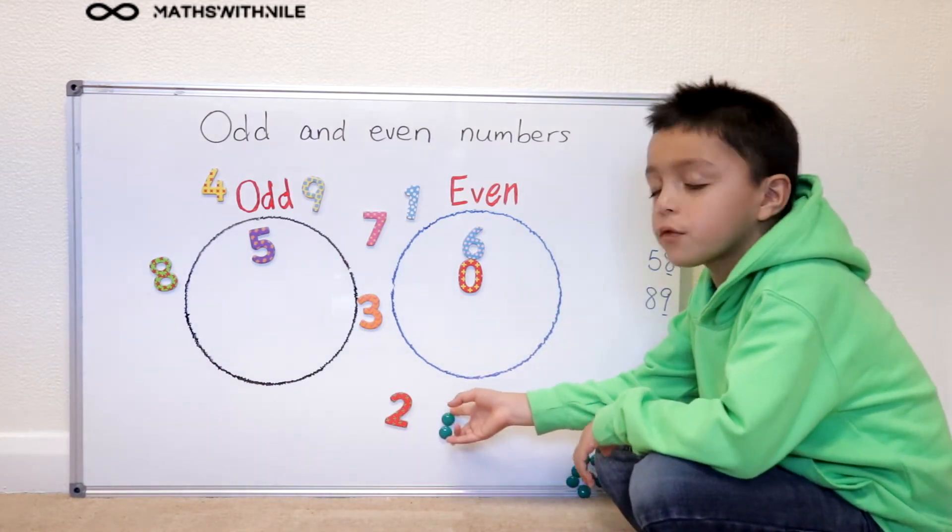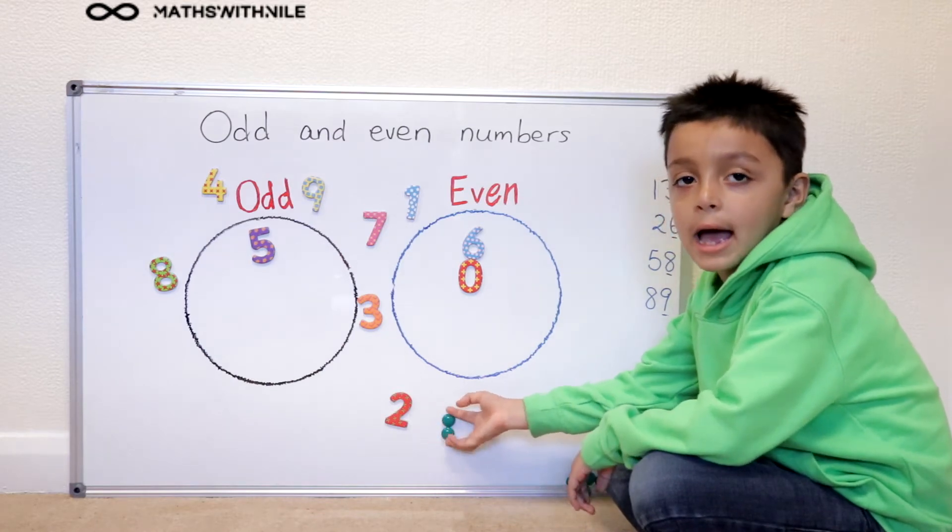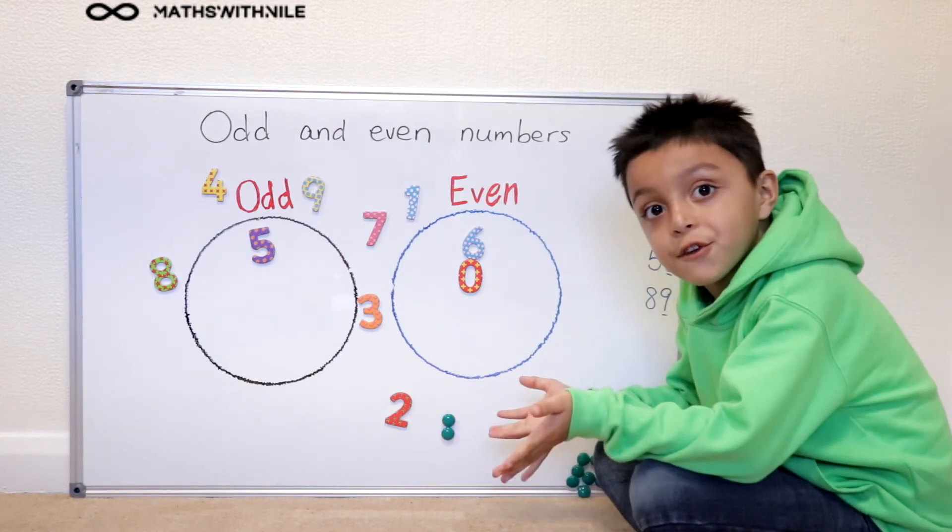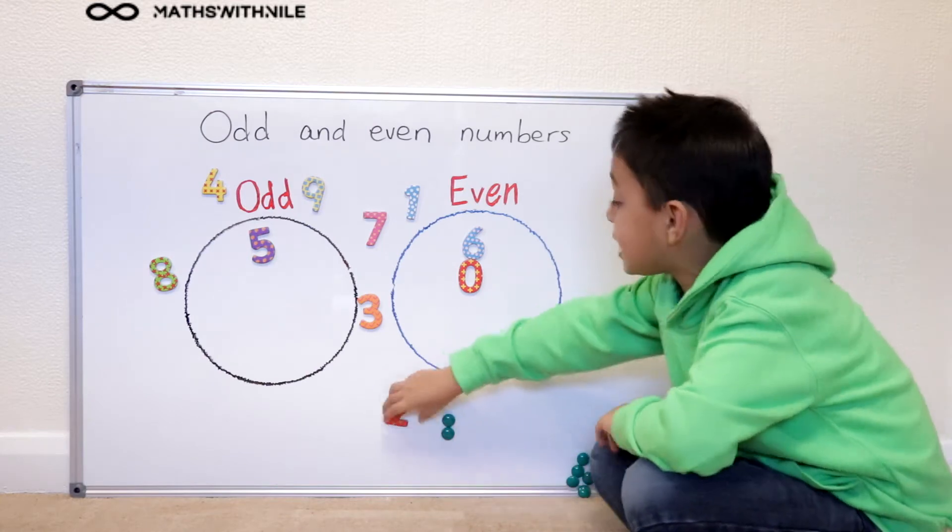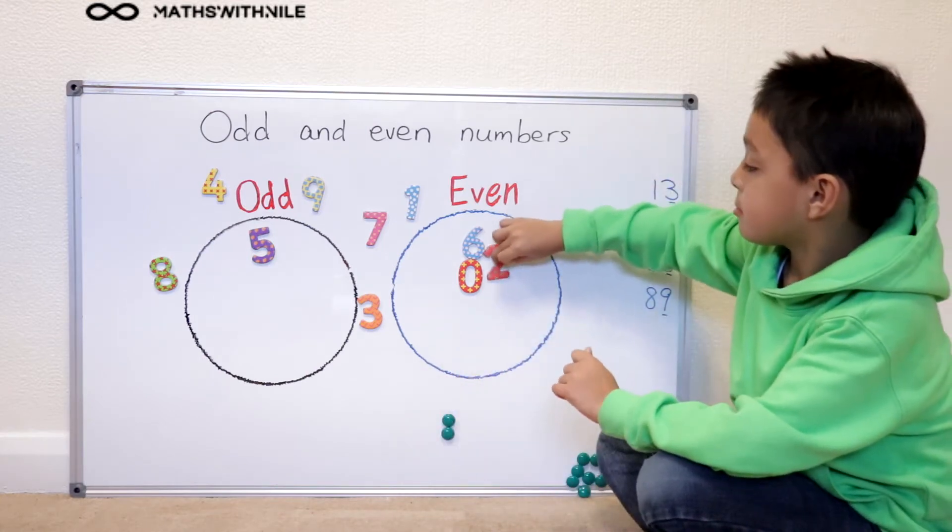And then we got one lot of two and none's left over. So two is an even number.